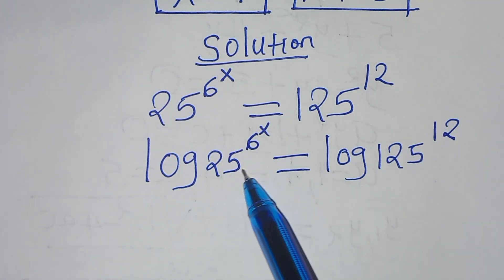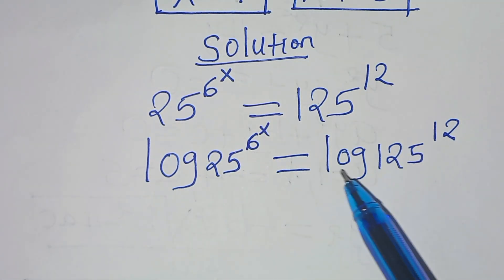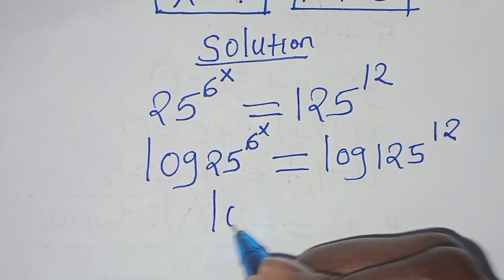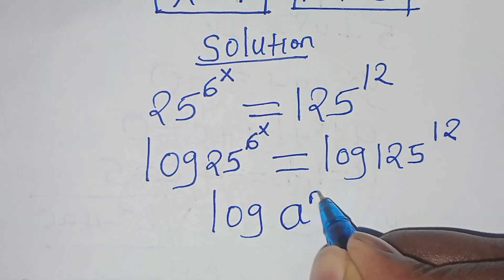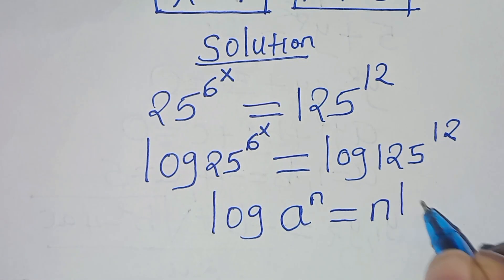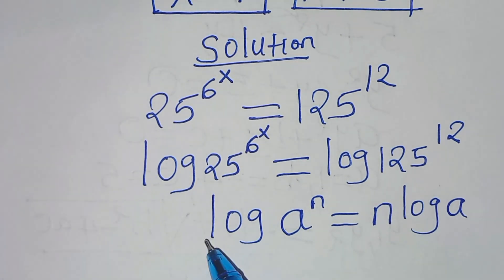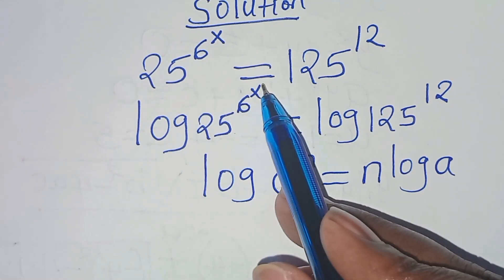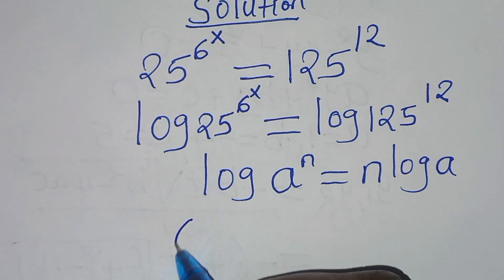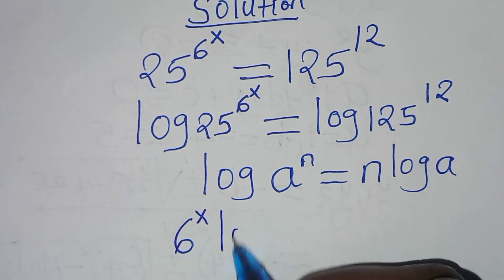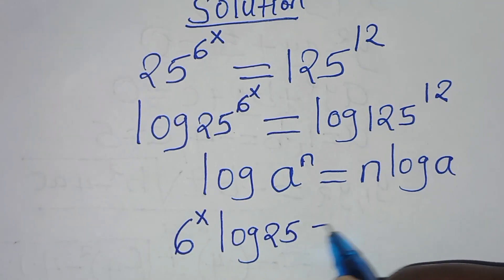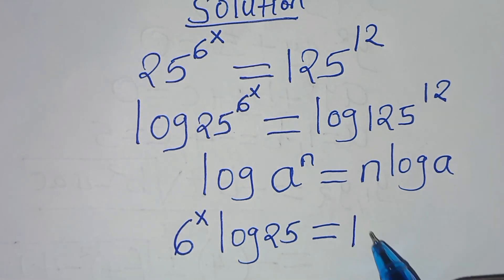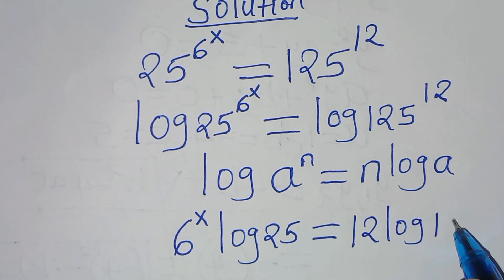The next step: log 25 raised to the power of 6 raised to the power of x, and log 125 raised to the power of 12 are in the form of log a to the power of n, which can be expressed as n log a. Applying this power property of logarithm, we can express log 25 to the power of 6 to the power of x as 6 to the power of x, then log 25. This is equal to, on the right-hand side, 12 log 125.